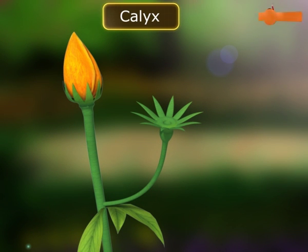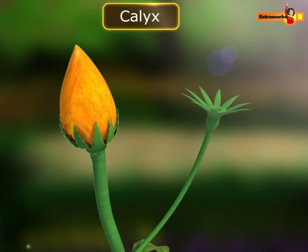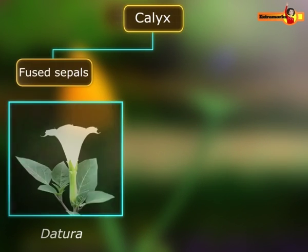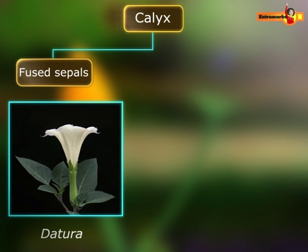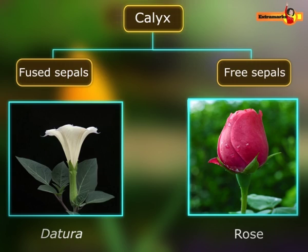Calyx is usually green in colour and during the bud stage, it protects the inner organs of the young flower. Some flowers like datura have fused or united sepals while others like rose have free sepals.